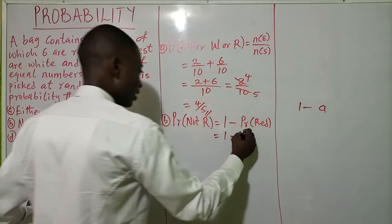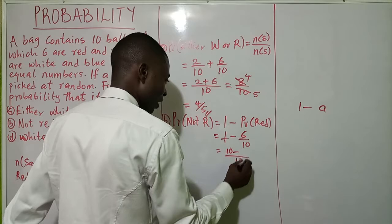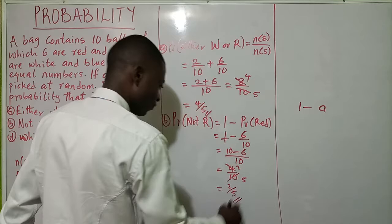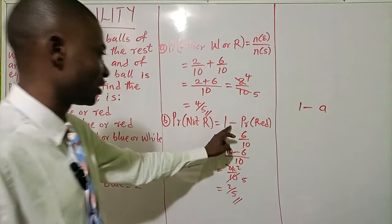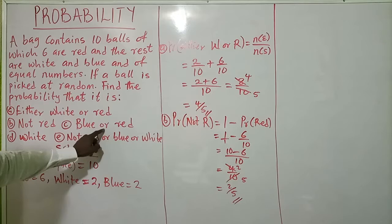One minus probability of red: the number of red balls is six, so that is one minus six over ten. The LCM is ten: ten over ten minus six over ten equals four over ten, which simplifies to two over five. So the probability of not picking red is two over five. Remember: probability of something not occurring is one minus probability of it occurring.